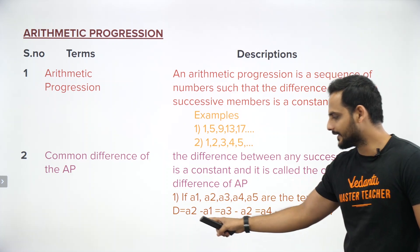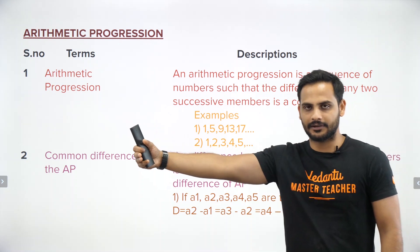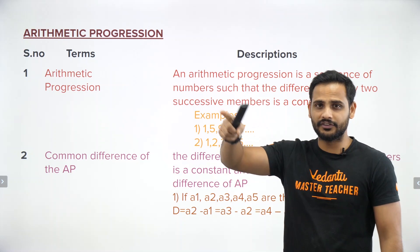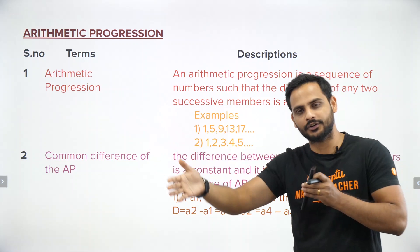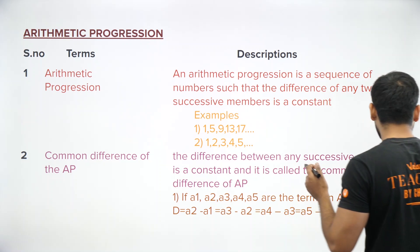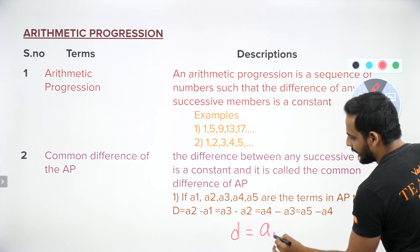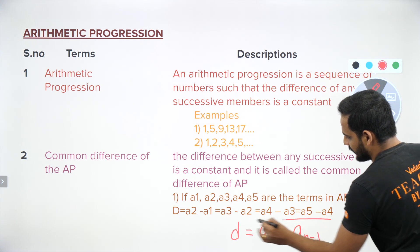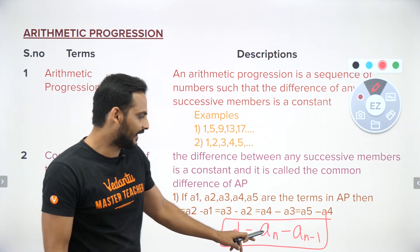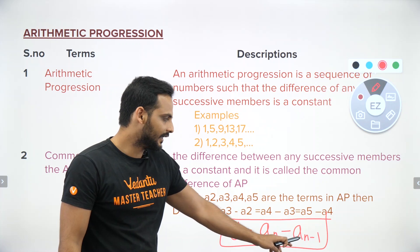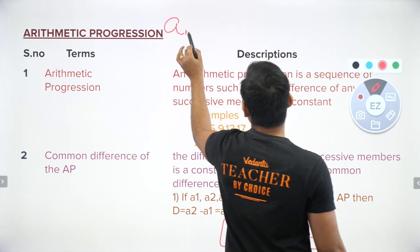Common difference of an AP: always remember it is a₂ minus a₁, or a₃ minus a₂, or a₄ minus a₃ — that is, the later term minus the previous term. You cannot do it the opposite way. The formula for common difference is: d = aₙ minus aₙ₋₁. For example, if n equals 5, then d = a₅ minus a₄.